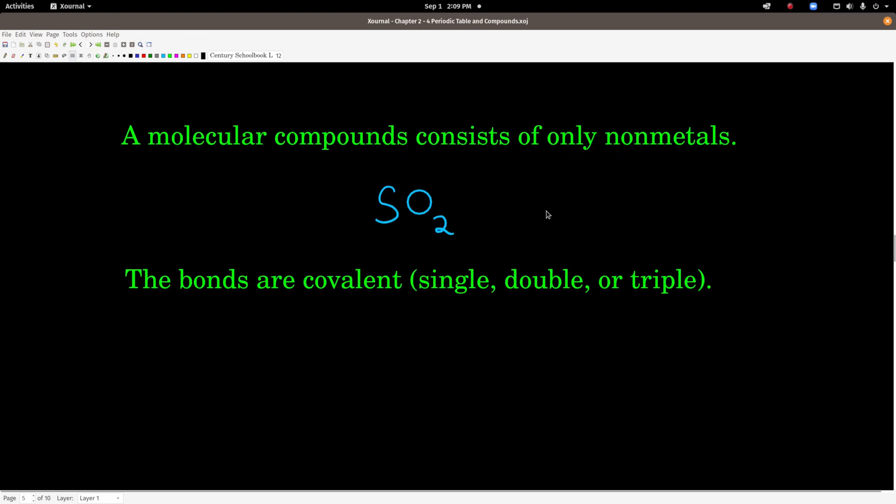A molecular compound is what you get when you combine only nonmetals. For example, sulfur dioxide, SO2. Sulfur and oxygen are both to the right of the staircase, both nonmetals, no metals, no cations in this compound. The way these atoms are held together is very different than in an ionic compound. Here they form what are called covalent bonds, a single, double, or triple covalent bond.